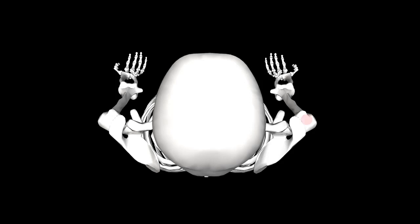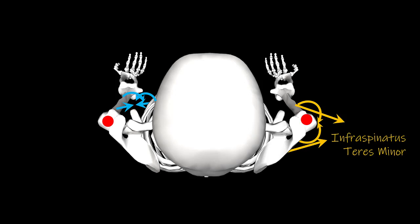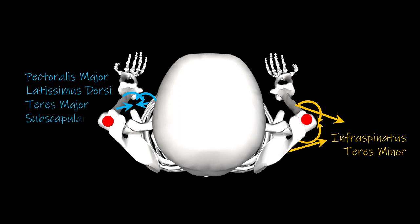In the transverse plane, we have a longitudinal axis that goes through the head of the humerus. The force vectors here are a little complicated, but force vectors such as these will create a torque that will externally rotate the glenohumeral joint, while force vectors such as these will create a torque that will internally rotate the glenohumeral joint. MTCs that will externally rotate the glenohumeral joint include the infraspinatus and the teres minor, while those that will internally rotate the glenohumeral joint include the pectoralis major, the latissimus dorsi, the teres major, and the subscapularis.